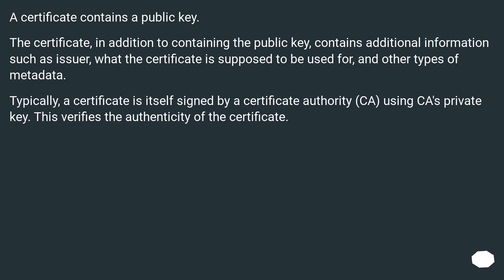A certificate contains a public key. The certificate, in addition to containing the public key, contains additional information such as issuer, what the certificate is supposed to be used for, and other types of metadata. Typically, a certificate is itself signed by a certificate authority (CA) using the CA's private key. This verifies the authenticity of the certificate.